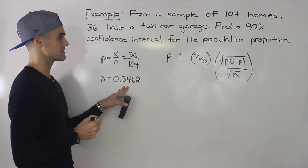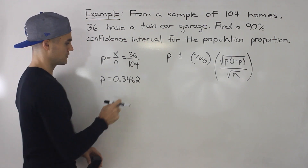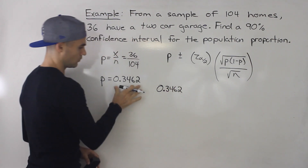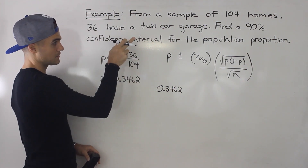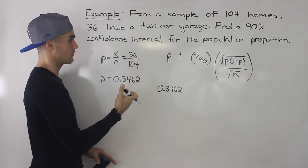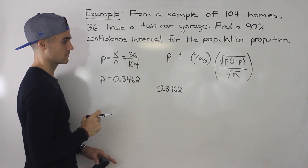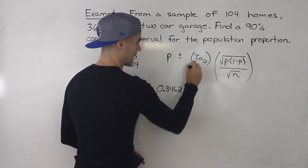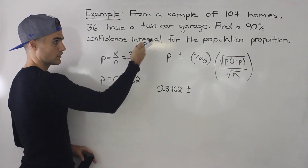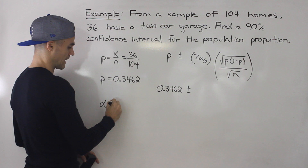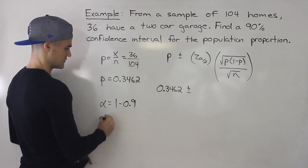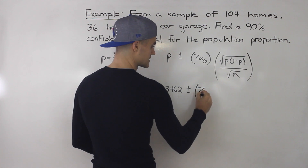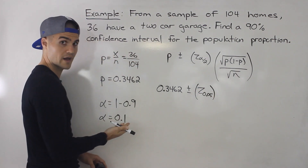I'll keep it to four decimal places: p equals 0.3462, meaning 34.62% of the homes in this sample have a two-car garage. Now, since we're looking for a 90% confidence interval, alpha equals 1 minus 0.9, which is 0.1. So alpha over 2 is 0.05.